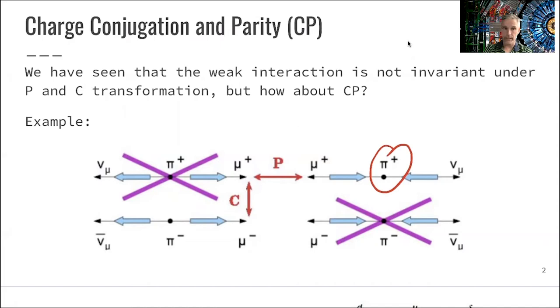If you do a parity transformation of this decay, you see that the outcoming muon would be right-handed. On the other hand, there is no right-handed neutrino, and therefore this decay is not possible. This mirror symmetry is not realized in nature as a consequence of the weak interaction.